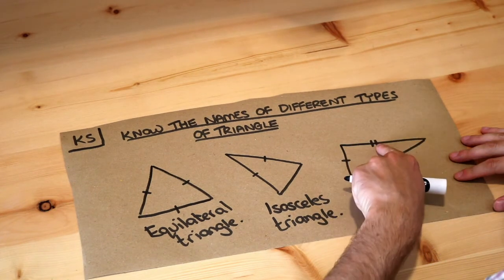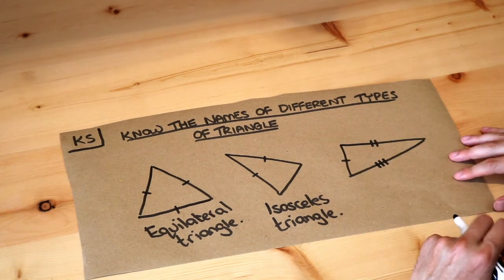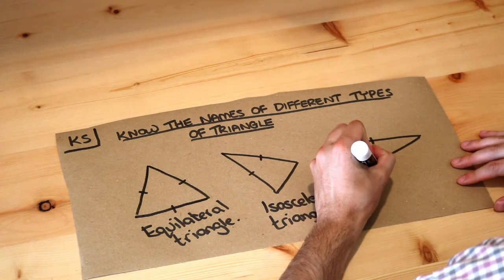...to indicate that that's a different length to that, which is a different length to that, then it's known as a scalene triangle.